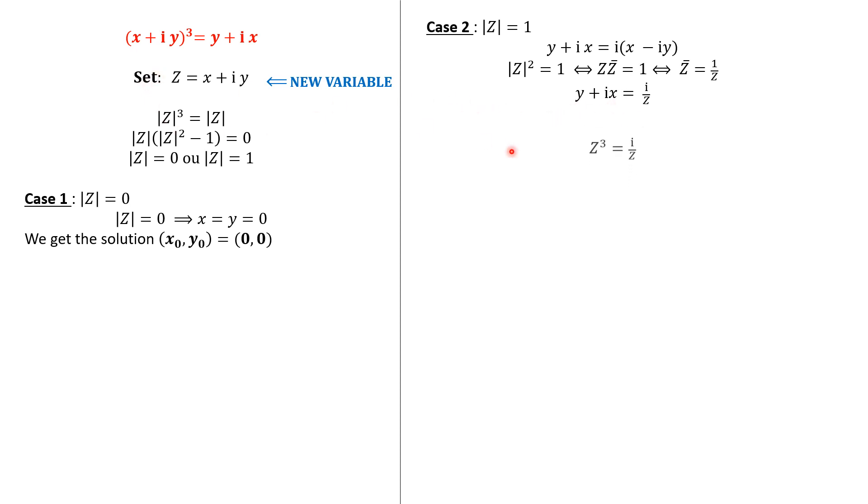But the same equals Z³. So Z³ equals i divided by Z, and Z raised to the power of 4 is i. We will write it as this, and we know that it is a well-known equation. So Z is the fourth root of this complex number. So we have four other solutions given as this.